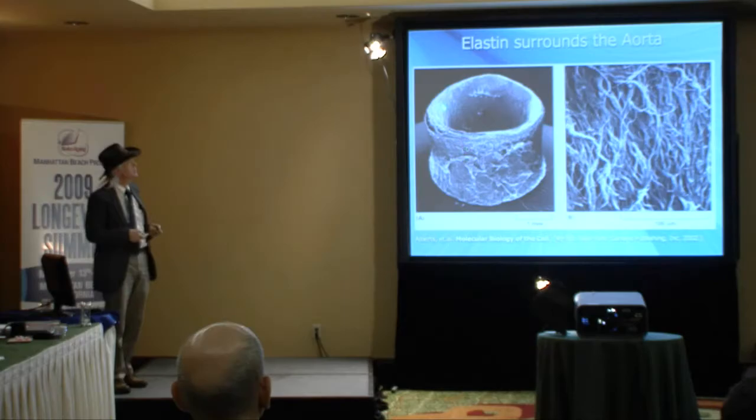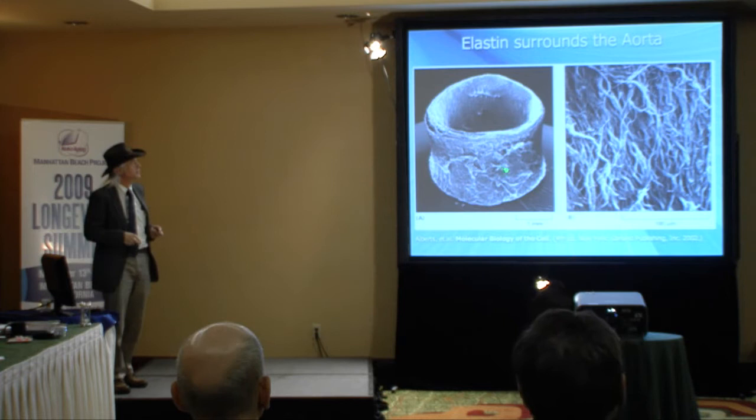If you dissolve all of the cells out of a section of the large artery leaving the heart, what you have left behind is the extracellular matrix. There's quite a lot of extracellular matrix even when you dissolve out all of the cells. This is just a magnified view, and this is just the elastin.